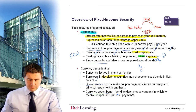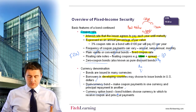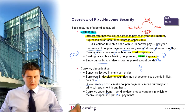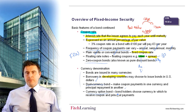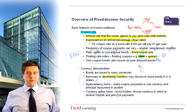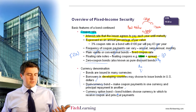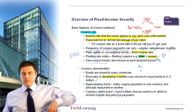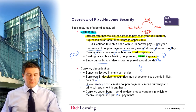A currency option bond gives the bondholder the choice of currency in which to receive the coupon and principal payment. This gives a little bit of flexibility to the bondholder to potentially choose the currency in which they wish to receive the coupon, therefore potentially giving them more incentive to enter into the bond in the first place.